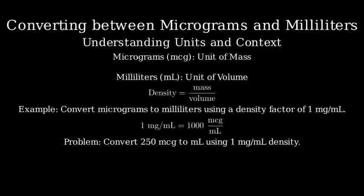First, convert 250 micrograms to milligrams, because our density is in mg/mL. Remember, one milligram equals 1,000 micrograms. So, we have 250 divided by 1,000, which gives us 0.25 milligrams.